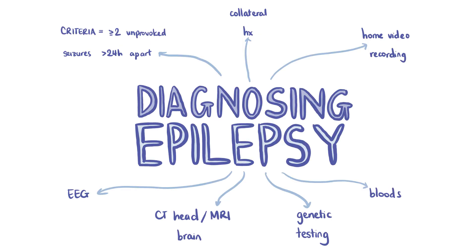Epilepsy is a clinical diagnosis based on a detailed history from the patient plus a collateral history if possible. Home video recording and written descriptions of events can be helpful in making the diagnosis. An EEG can demonstrate abnormal electrical activity in the brain. A CT head or MRI of the brain can be useful if there are focal neurological signs, to look for structural abnormalities or signs of head injury. Genetic tests to identify known epilepsy syndromes can be helpful if there is clinical suspicion. In adults, blood tests like plasma electrolytes, glucose and calcium can identify potential causes for seizures.